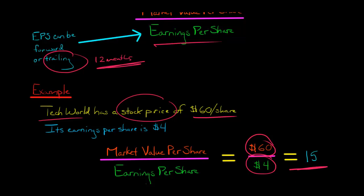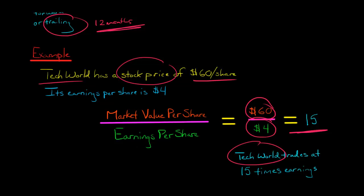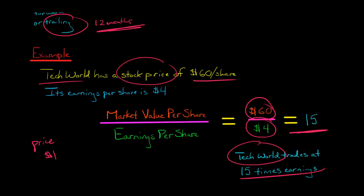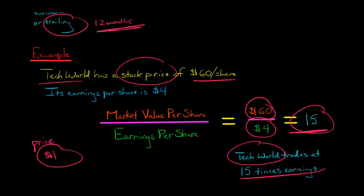What an analyst would say is that Tech World trades at 15 times earnings — that's very common phrasing. What people are really saying is: what is the price of $1 of earnings per share? In this case, it costs $15 to buy $1 of earnings. You're not actually buying $1 of earnings per share — you can't do that — but it gives you an idea of relative value. For this company, it costs $15 to buy $1 of earnings per share.